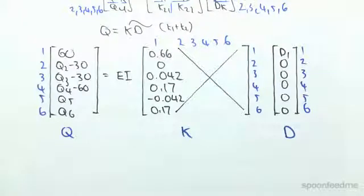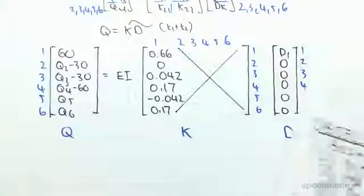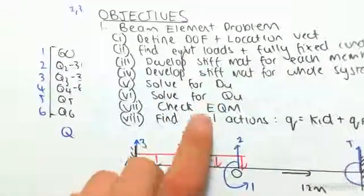Hey guys, I'm just continuing straight on from the previous video. We found the stiffness matrix for the entire system and their corresponding equations. We're now going to solve for du and q unknown.